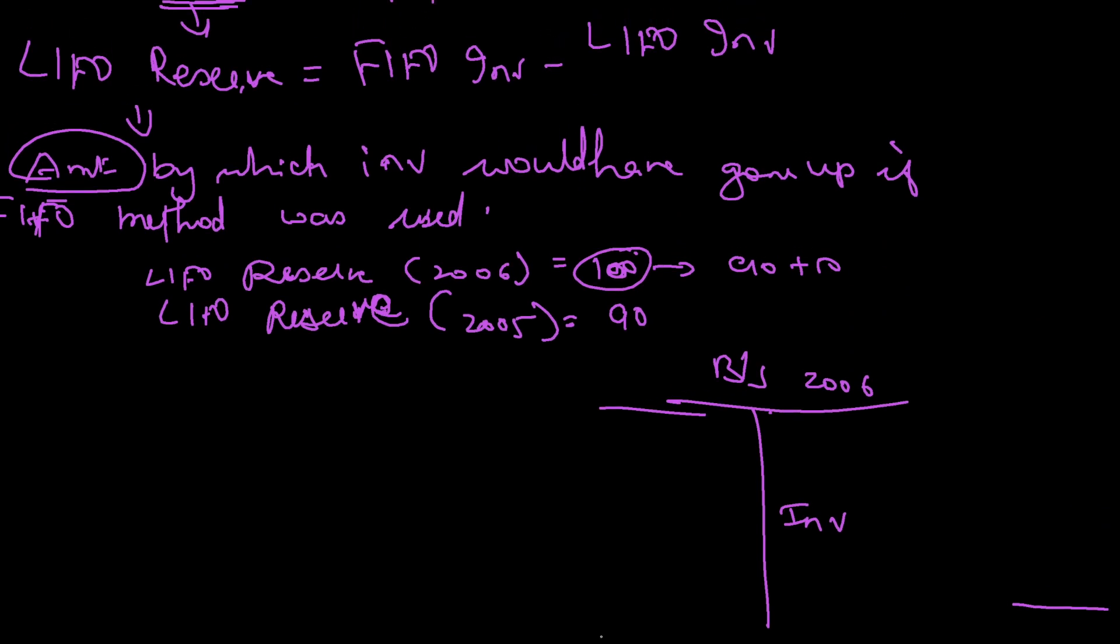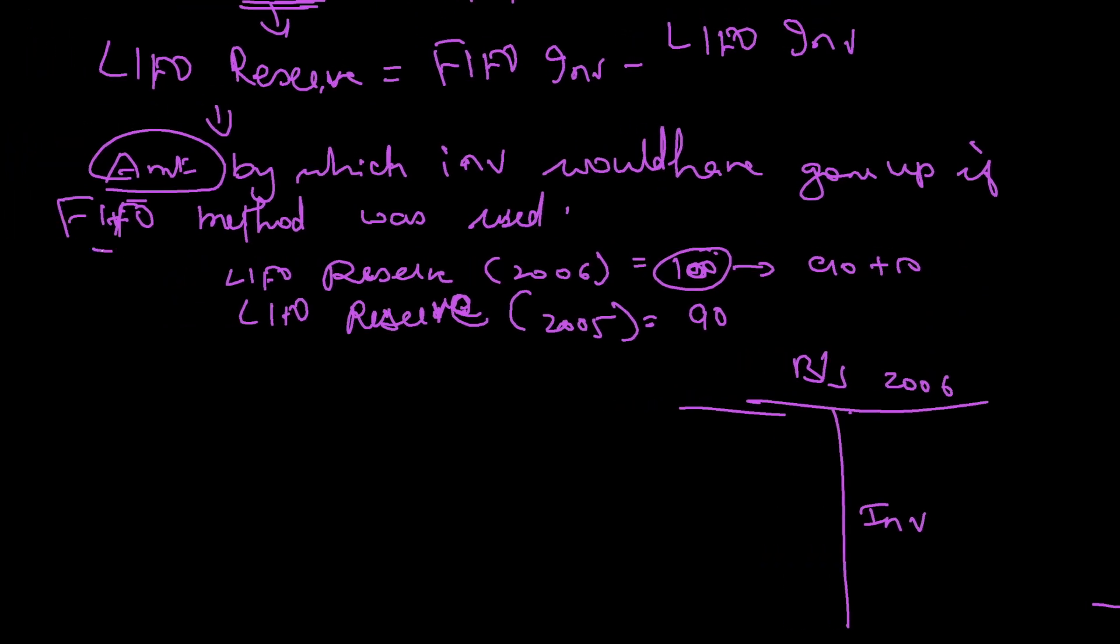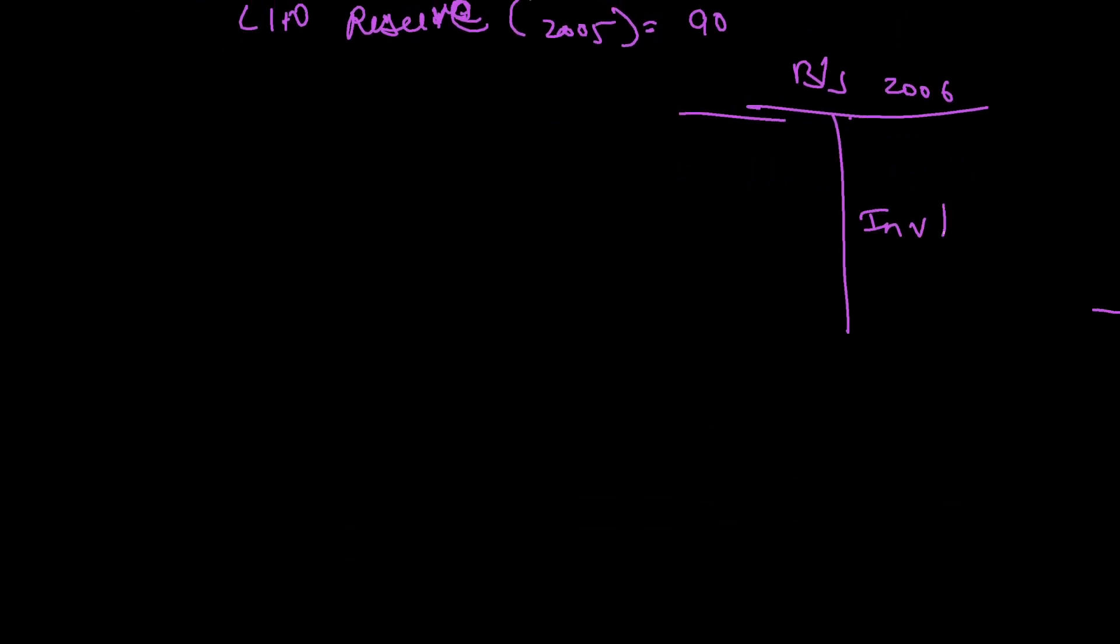Balance sheet as of 2006: LIFO reserve is 100, so my inventory will go up. If I convert it into FIFO, this is the amount by which it will go up. When I increase this amount by 100, automatically income statement for 2006, cost of goods sold will get impacted and come down by 100.